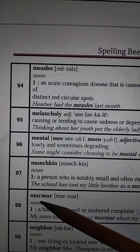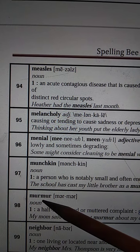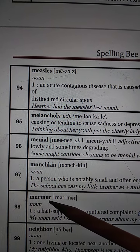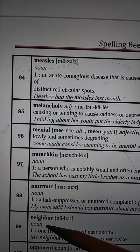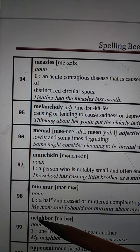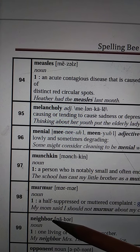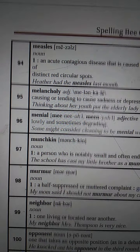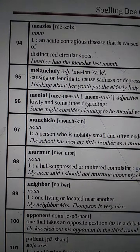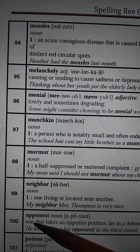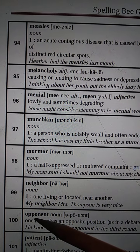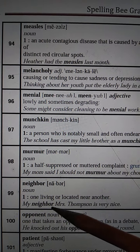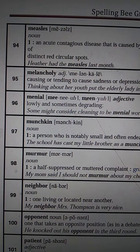Number 98: Murmur. M-U-R-M-U-R. Murmur. M-U-R-M-U-R. Number 99: Neighbor. N-E-I-G-H-B-O-R. Neighbor. N-E-I-G-H-B-O-R. Number 100: Opponent. O-P-P-O-N-E-N-T. Opponent. O-P-P-O-N-E-N-T. Opponent. So these are the spellings from 90 to 100.